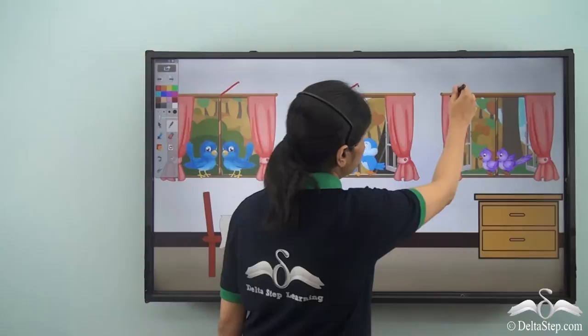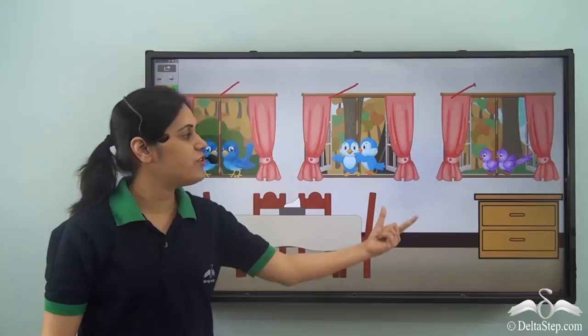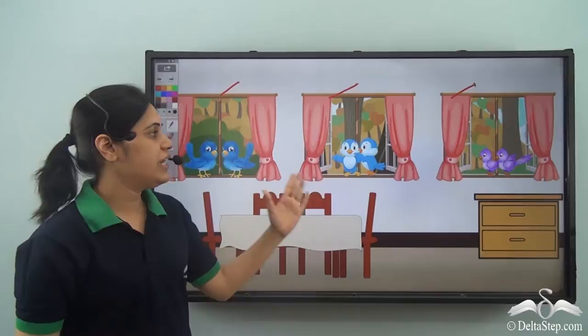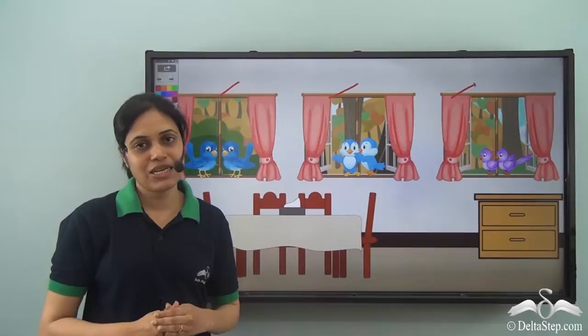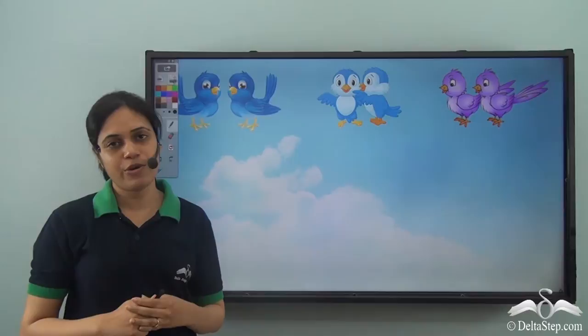She counts and sees there are three windows, and on each window there are two birds sitting. So on each of the three windows there are two hungry birds sitting and waiting for food. Sarah decides to count the number of birds.